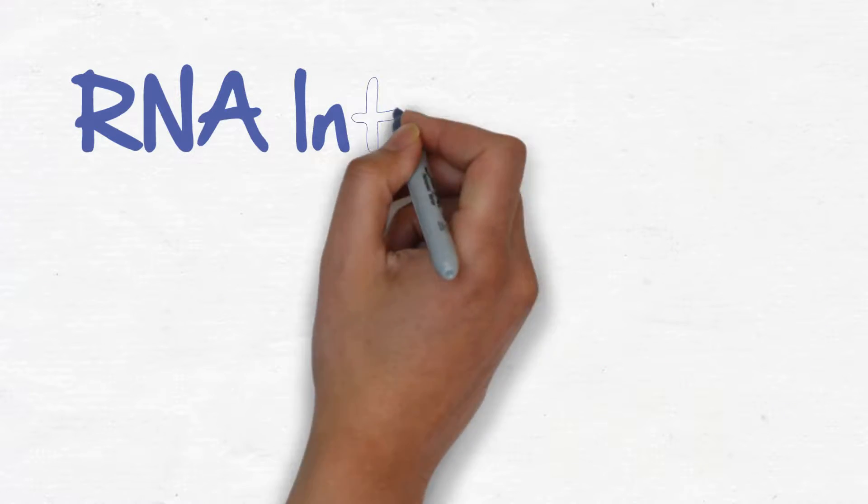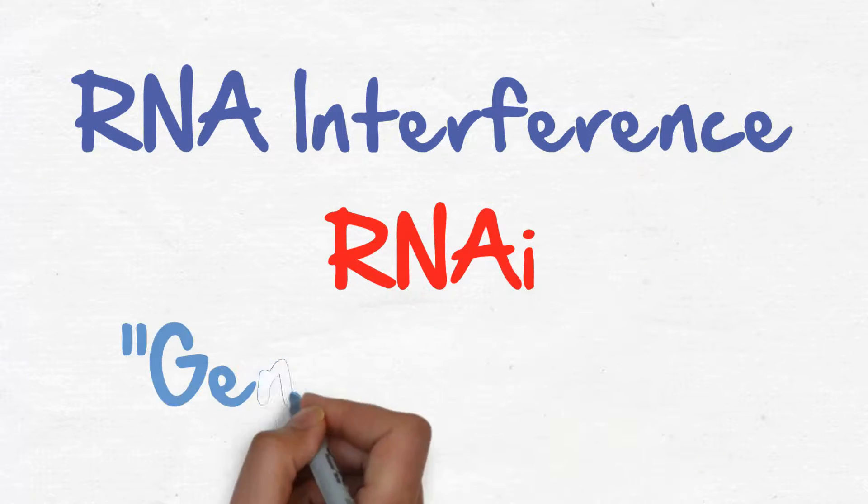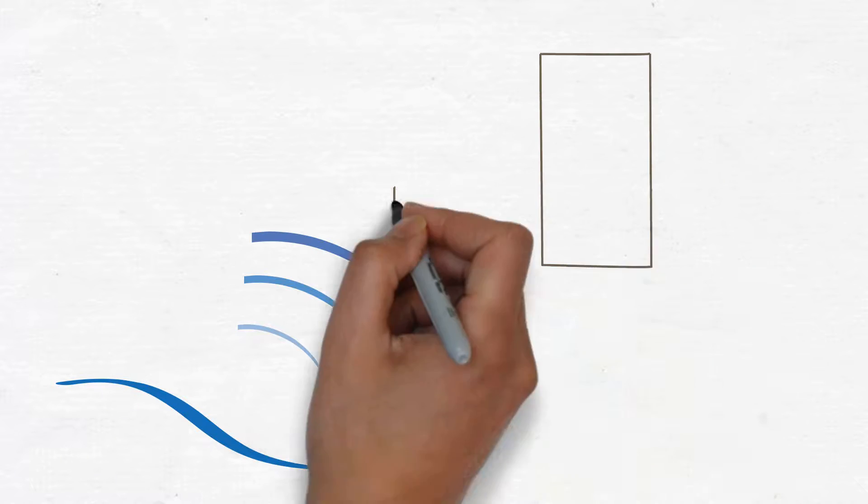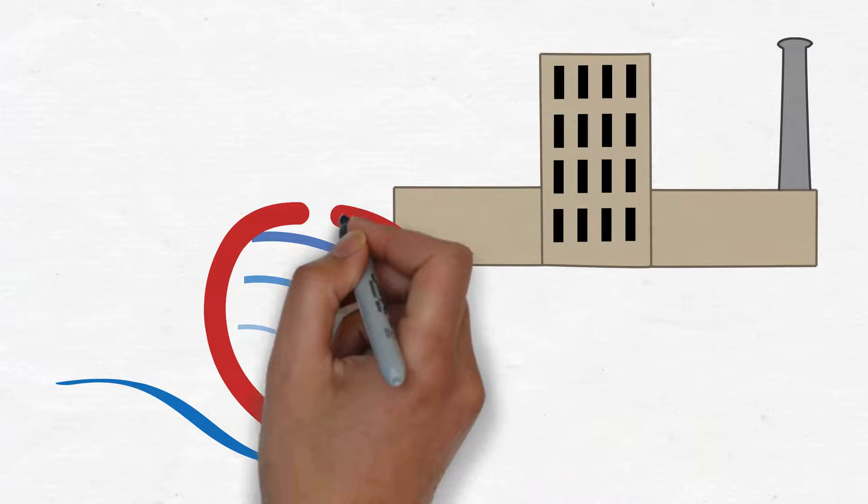It's called RNA interference, or RNAi, also known as gene silencing. It minimizes the effect of overexpression of genes, and can effectively turn off or silence certain genes that cause diseases.